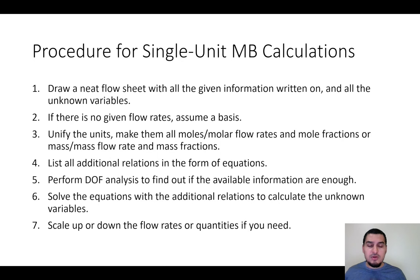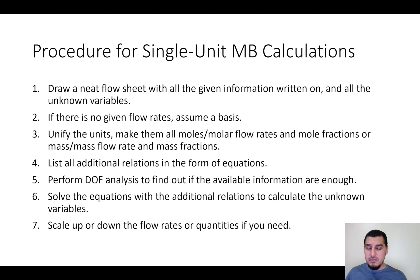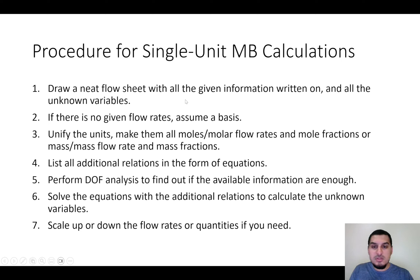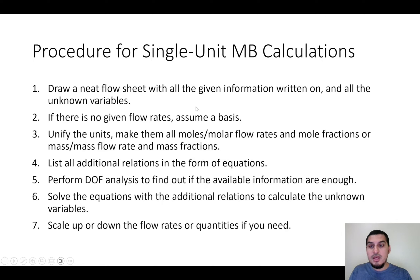We are going to solve one more example on the degrees of freedom analysis. Before we start, I want to go through the procedure as a list of consecutive steps so that you can check that you are not missing anything. First, we have to start with the flowsheet with all given information written on it, whether we know them or not, and all the values of the known variables. Then if there is no flow rate, we have to assume a basis.